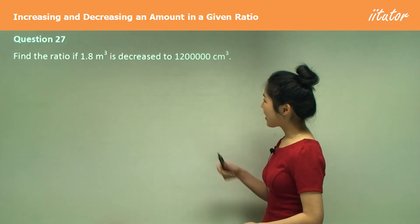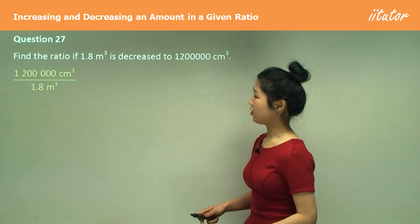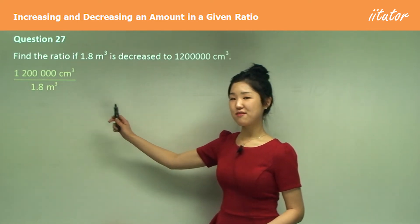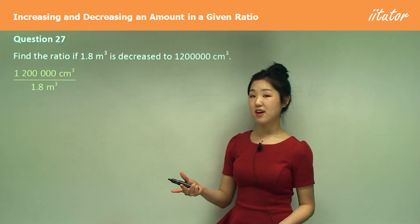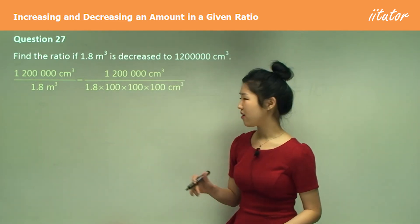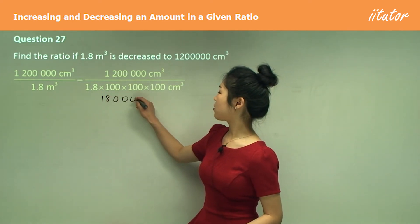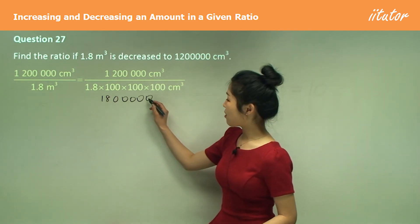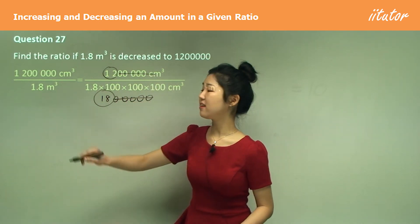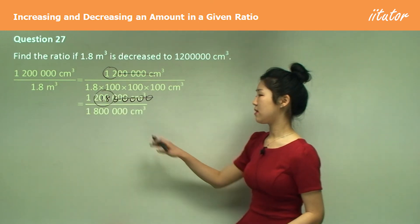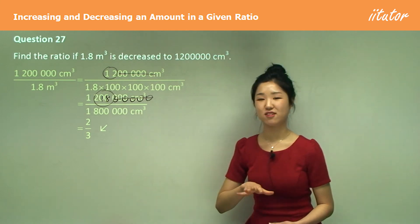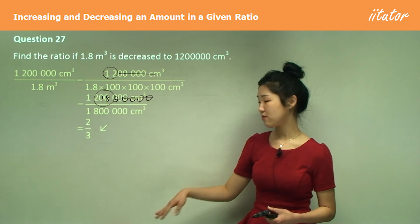One more example: new to old, converting meters cubed to centimeters cubed. Because it's meters cubed, multiply by three lots of a hundred. Cancel out all the zeros — there are five zeros to cancel — leaving 12 over 18. The common factor is 6, so divide top and bottom by 6 to get 2 on 3. It's a good idea to add that step in your working out: times out everything, cancel zeros, then simplify by the common factor.